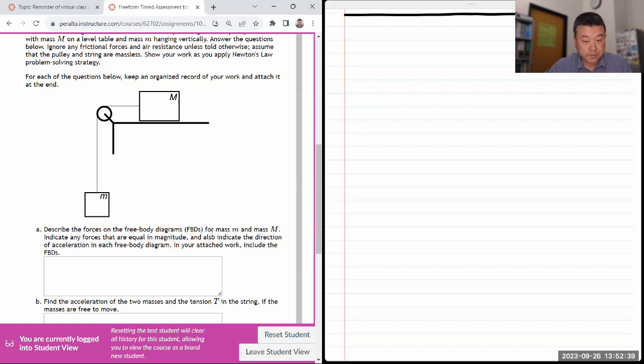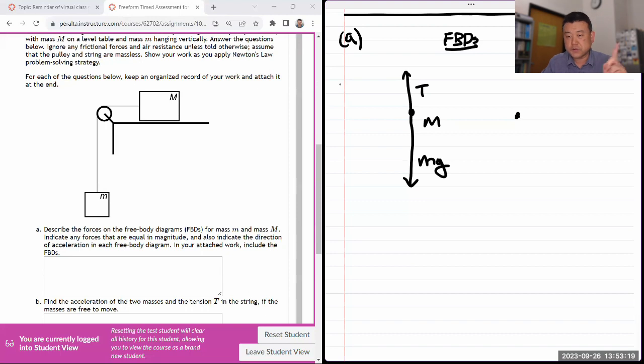It says describe the forces on the free-body diagram for m and small m and big M. It can mean forces that are equally magnitude. Okay. So let me draw those free-body diagrams. And these free-body diagrams are now related to each other. It's not a single-object free-body diagram anymore. So I have free-body diagram for the small hanging mass m. There's always going to be gravity there. So you start out with gravity and you think through, okay, what else is touching this mass? The string is touching it. So there must be a tension force upward.